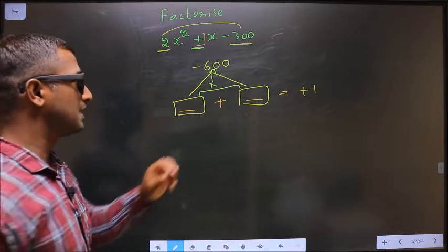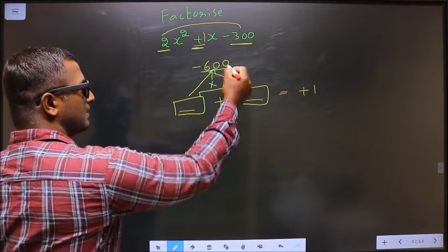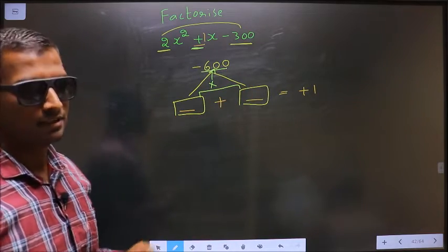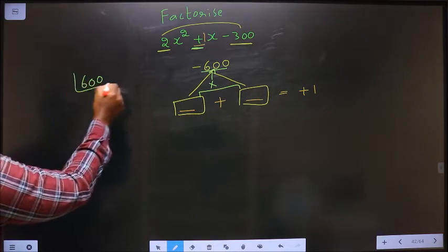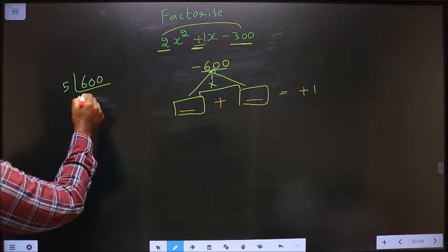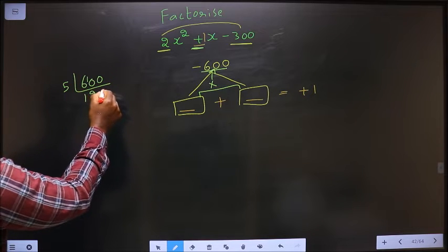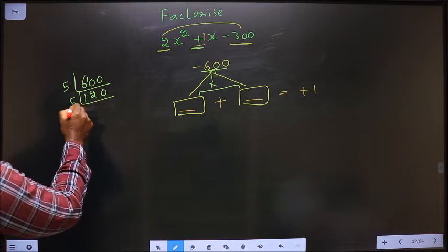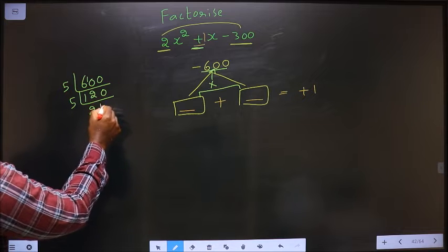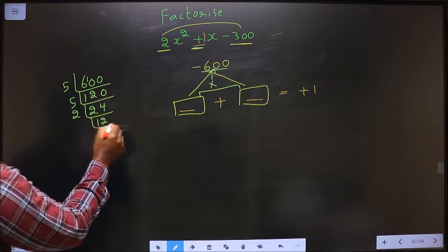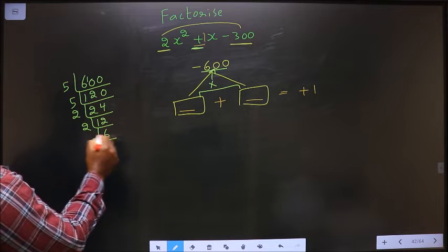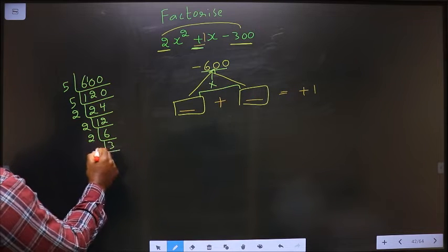To get these two numbers, we should take the prime factorization of 600. Starting with 5: 600 ÷ 5 = 120. Again 5: 120 ÷ 5 = 24. Then 2: 24 ÷ 2 = 12. Then 2: 12 ÷ 2 = 6. Then 2: 6 ÷ 2 = 3. Then 3: 3 ÷ 3 = 1.